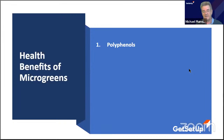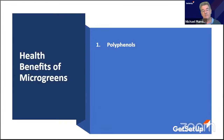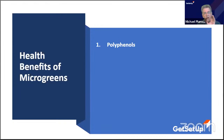Polyphenols are a category with many different types. These little plants are loaded with phytonutrients, which fall under that category. Phytonutrients have been shown to lower cholesterol and triglycerides, and help people with rheumatoid arthritis symptoms.